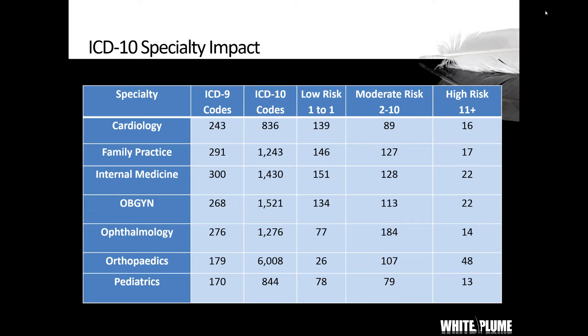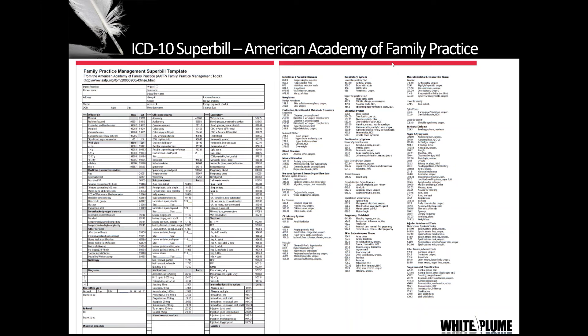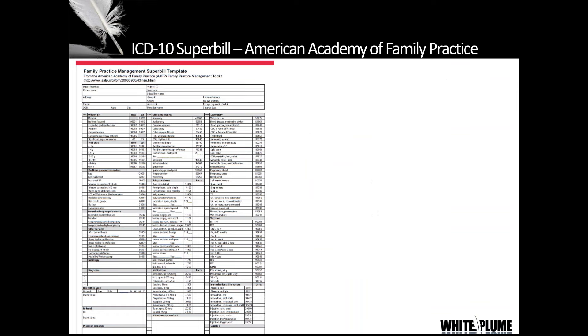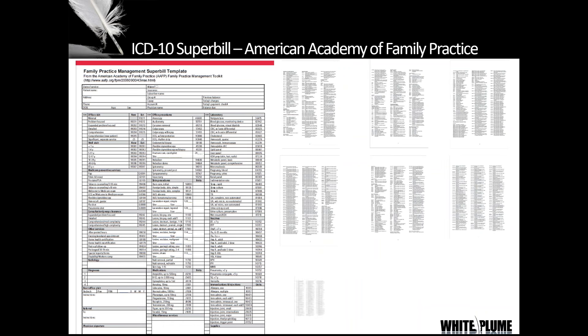For those of you who are more visual learners, this comes from the American Academy of Family Practice. They put an ICD-9 superbill on their website — it looks like every superbill you've ever seen, with CPT codes and descriptions on the front and diagnosis codes and descriptions on the back. What really caught my attention is they had an ICD-10 version as well. The front side stayed the same — no changes to the CPT codes on October 1st. But the back side is eight pages long.